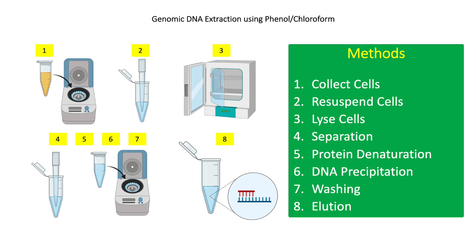For step three, add 10 microliters of proteinase K to the cell suspension. Vortex or pipette to mix. Incubate at 50 degrees Celsius overnight. This will lyse the bacterial cell wall, releasing the cytoplasmic contents.